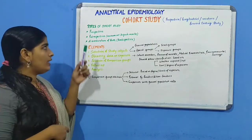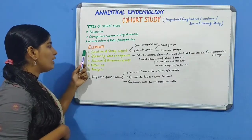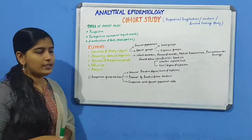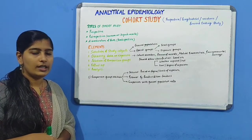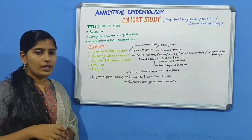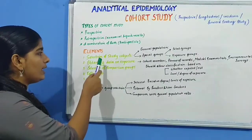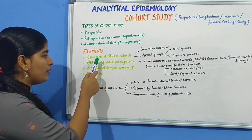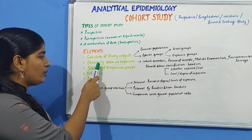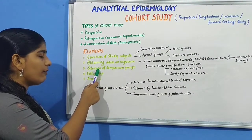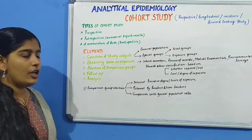Moving on to the elements or the steps in a cohort study, there are five main elements: selection of study subjects, obtaining data on exposure, selection of comparison groups, follow-up, and analysis.